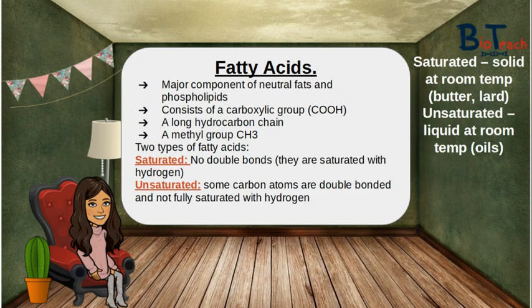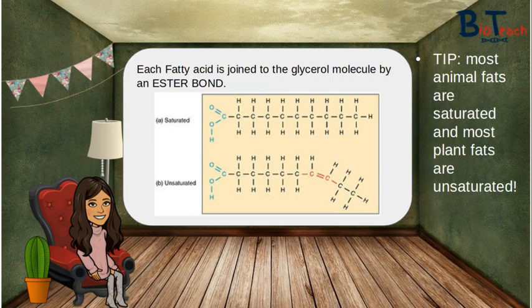The reason for this is that the double bonds in the hydrocarbon chains cause a bend or kink in the chain, which means the chains do not pack closely together, hence creating something more in its liquid form. In this diagram, you can see what I mean by bends or kinks. The top fatty acid chain is a saturated one, as it only has single bonds between the carbons, and the bottom one is an unsaturated one — you can see how that causes a bend in the chain. Each of these fatty acids will be joined to a glycerol molecule by an ester bond to form a lipid molecule.